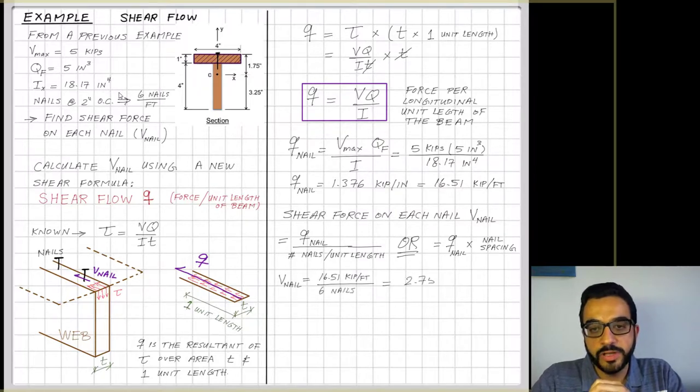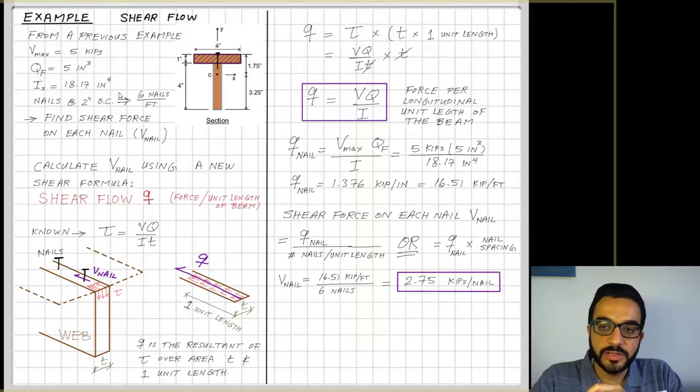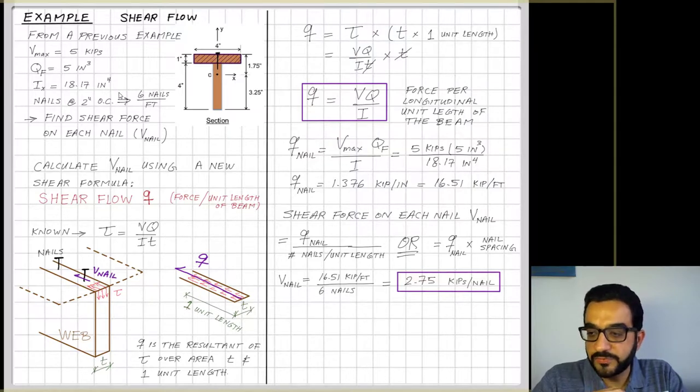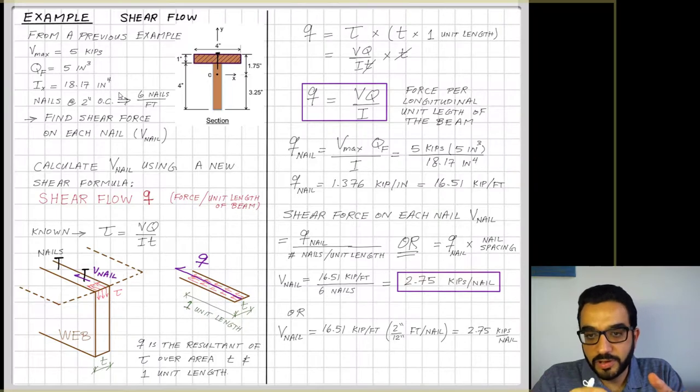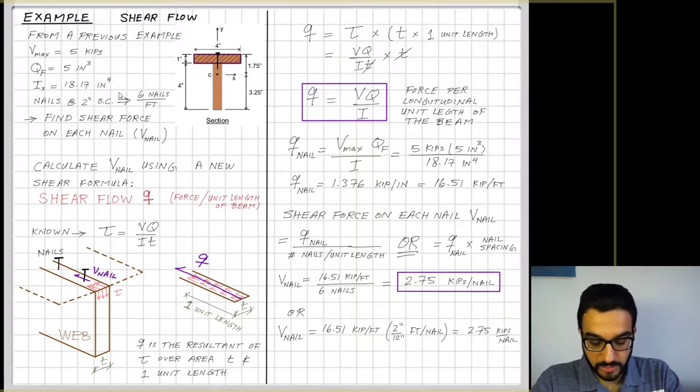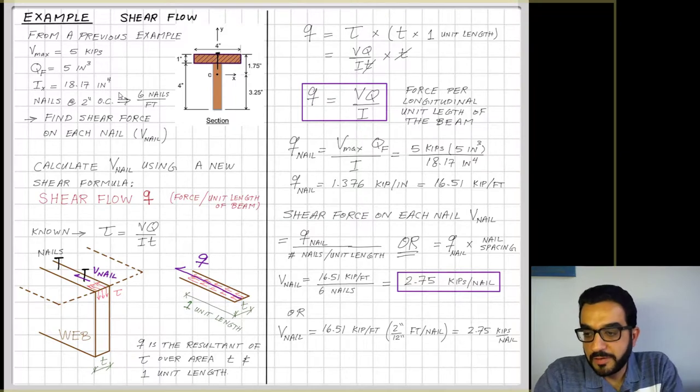Let's prove that using the example. If the nails are at two inches on centers, this means that in every foot I have six nails. I will divide the shear flow 16.51 kip per foot over six nails, so every nail will be responsible for carrying 2.75 kips. The other way is multiply 16.51 kip per foot times the spacing, but now the spacing of two inches must be brought to feet. We end up with V_nail similar to the first approach, so either one is fine.